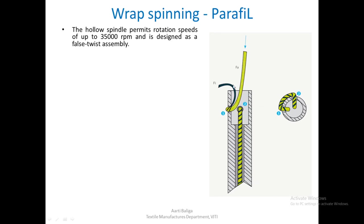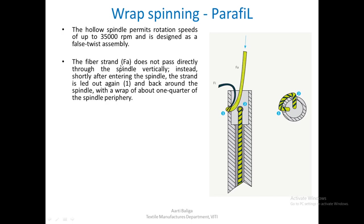This is the cross-section of the hollow spindle. The filament is being fed from a bobbin mounted as a package around the hollow spindle. The fibre strand FA does not pass directly through the spindle — instead, shortly after entering, the strand is laid out back around the spindle with a wrap of about one quarter of the spindle periphery, similar to the top of the flyer in a speed frame.